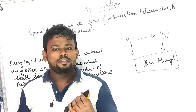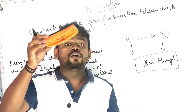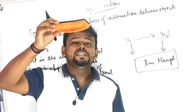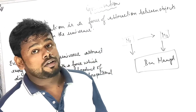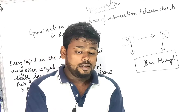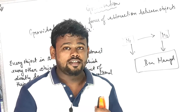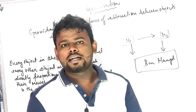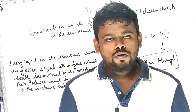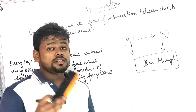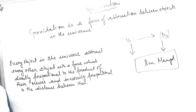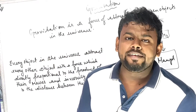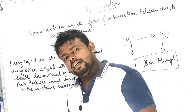For example, if a duster is falling down, there is no contact between the Earth and the duster — that is why it is a non-contact force. Muscular force, on the other hand, is a contact force. There are many contact and non-contact forces, and gravitational force is a non-contact force.